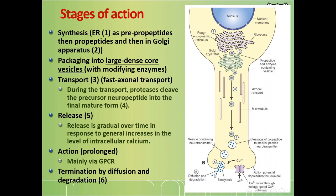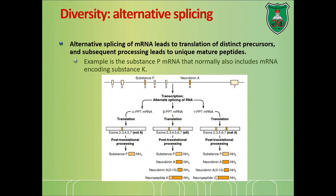Once released, neuropeptides bind to receptors — mainly G-protein-coupled receptors — on the postsynaptic cell surface, and are removed by diffusion and degradation. Some neuropeptides can enter the lymphatic or blood system, traveling far away from their release site to act on distant cells.